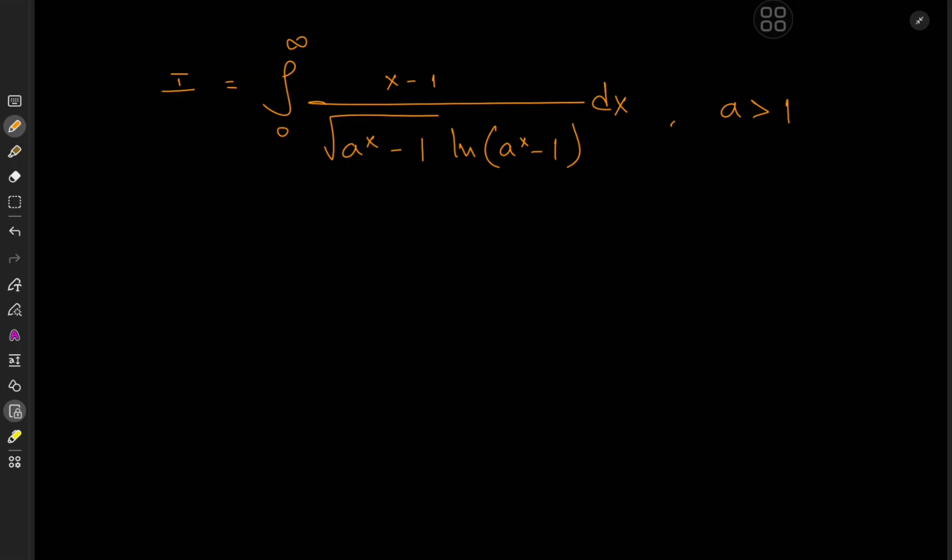And that integral was actually solved using a phase shift which I thought was really cool, but I'm going to solve this using a more direct line of attack. And by direct I mean I'm just going to take this a^x - 1 term and set it equal to u. Now this of course implies that a^x would be u + 1 and x would be log(u + 1) over log(a).